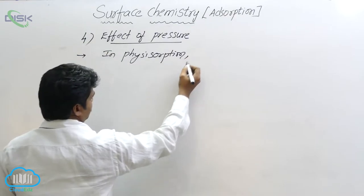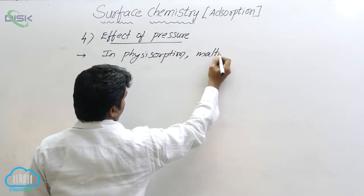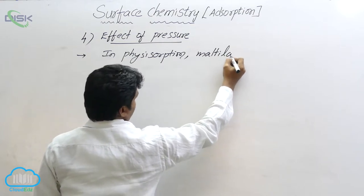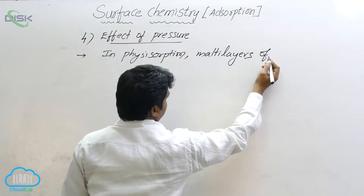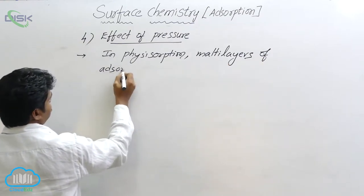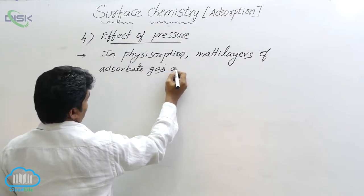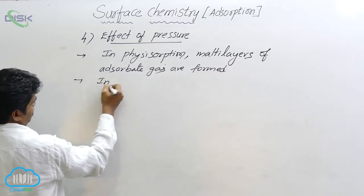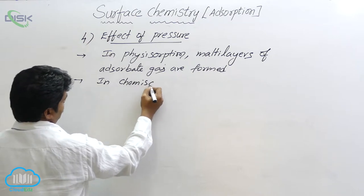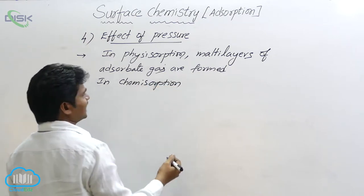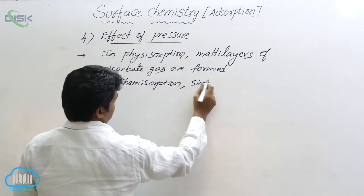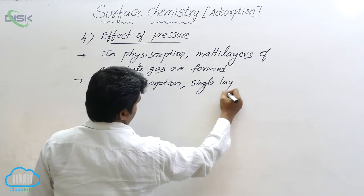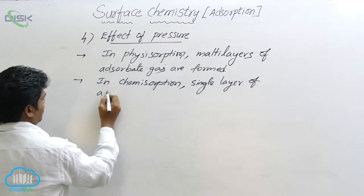In physical adsorption — the other name being physisorption — multilayers of adsorbate gas are formed. Whereas in the case of chemisorption, only a single layer of adsorbate is formed.